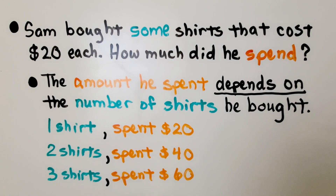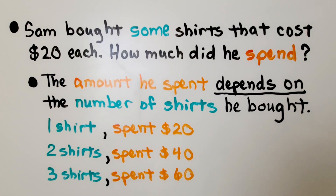Sam bought some shirts that cost $20 each. How much did he spend? If someone asked you that, you'd say, how many shirts did he buy? Because the amount he spent depends on the number of shirts he bought.